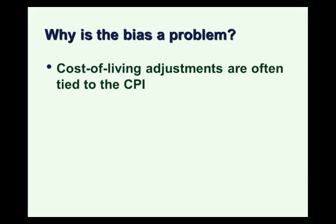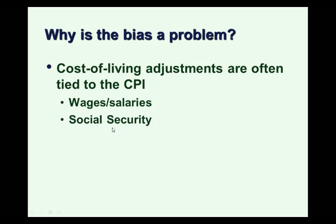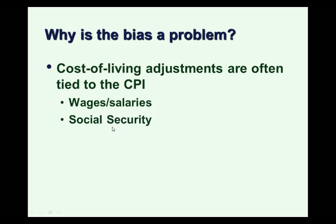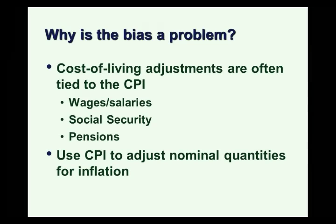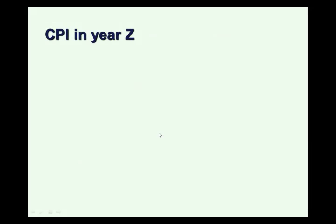Why do we care about this bias? Well, if the CPI is measuring inflation, it's often also measuring cost of living adjustments. Wages and salaries under certain contracts, social security, and federal pensions are indexed to the Consumer Price Index. We even use the CPI to adjust the tax brackets every year on tax forms. So if we use the CPI to adjust nominal quantities for inflation and the CPI is biased, our adjustments are wrong — so it's something we have to care about.